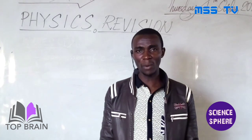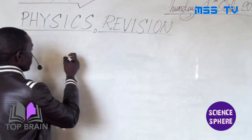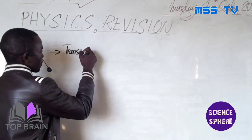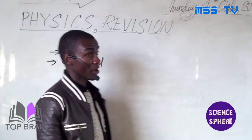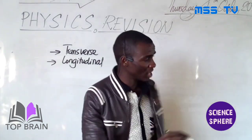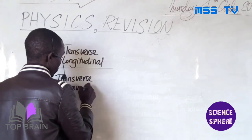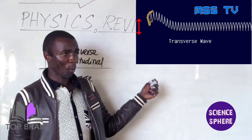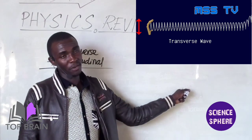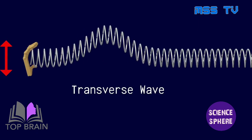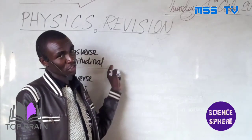Having looked at the two broad categories of waves, we need to emphasize that waves can further be subdivided according to the way in which they are propagated. This gives rise to two more types: transverse and longitudinal. For transverse waves, like you can see on the right-hand side of your screen, when a slinky spring is moved up and down, the wave moves from left to right — across.